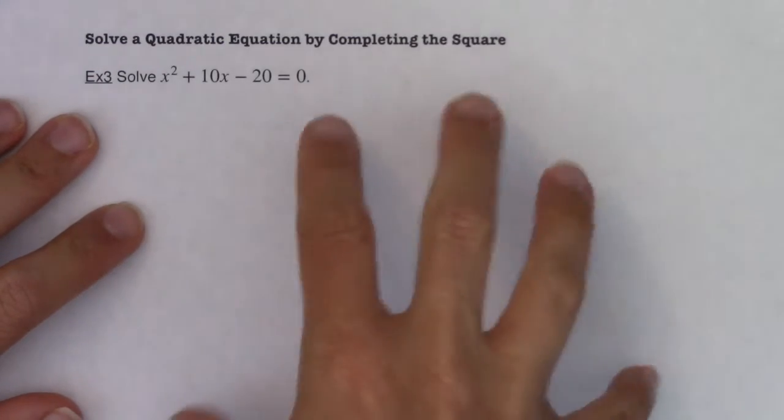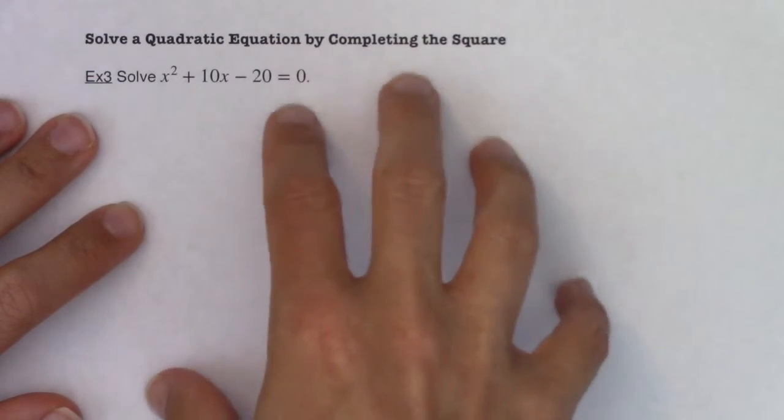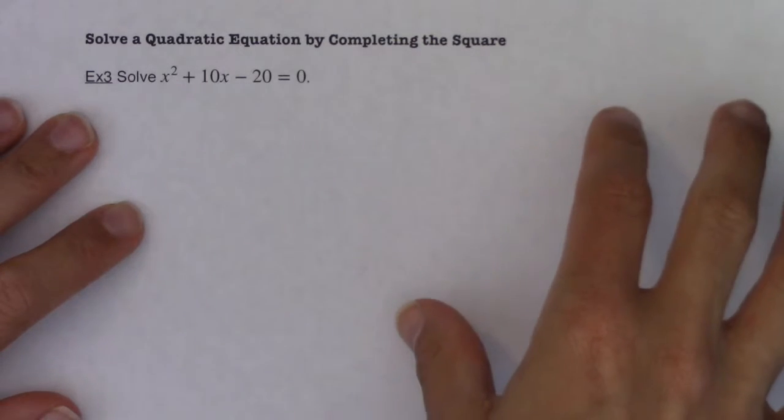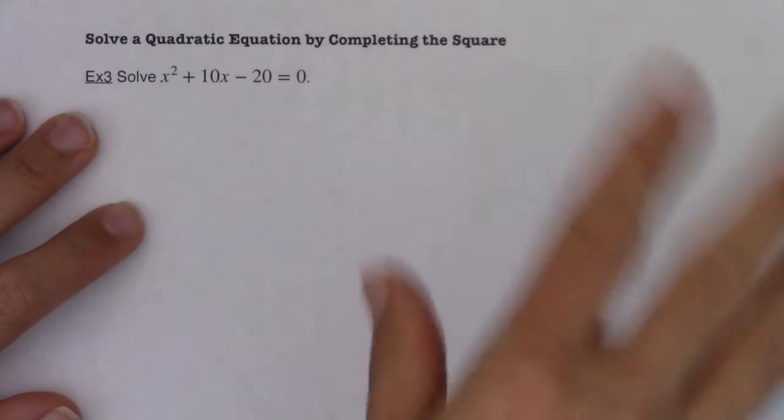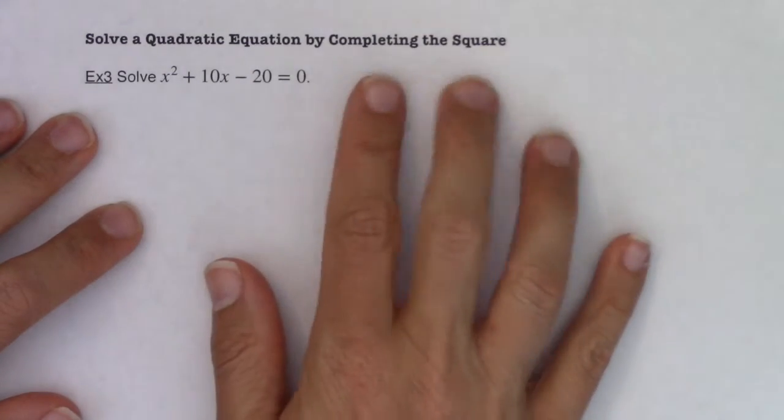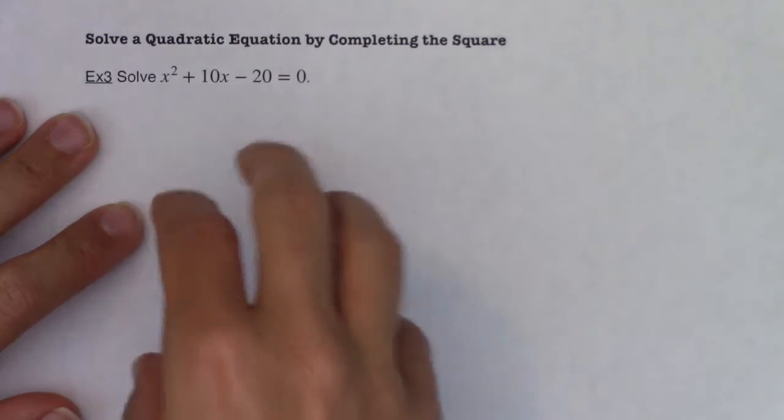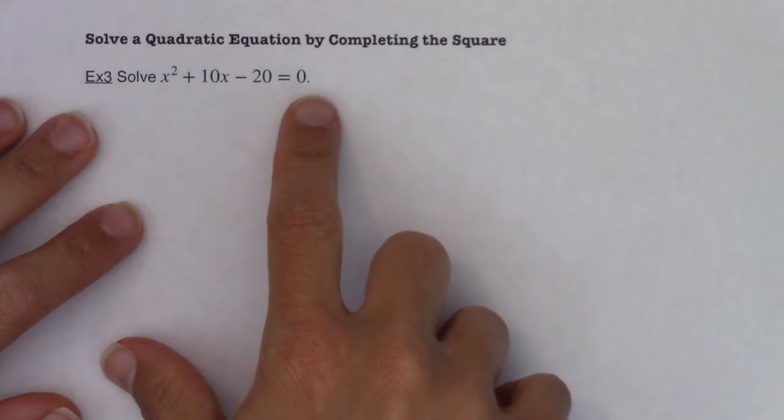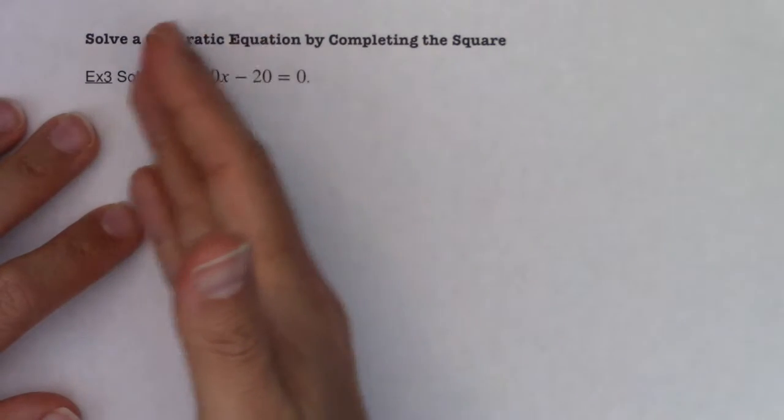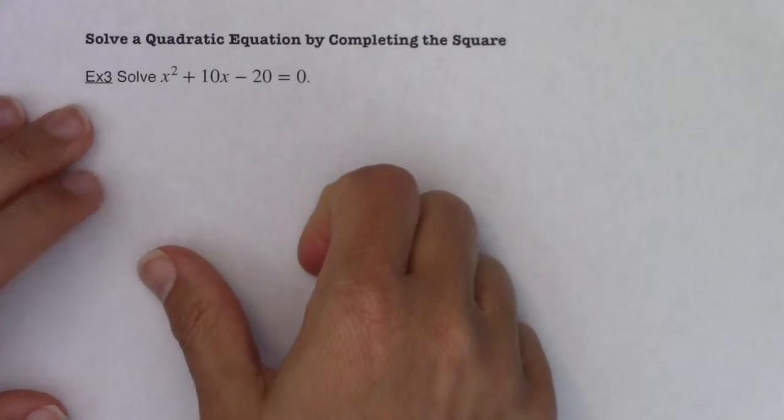So I don't complete the square super often, but we will use this technique of completing a square to solve some, to graph some conic sections later on in the semester. So it's a good technique to learn. Where completing the square differs from the quadratic formula in factoring is that you actually don't want your equation set equal to zero. You want the constant on the right side of the equation and all the terms with variables on the left side.